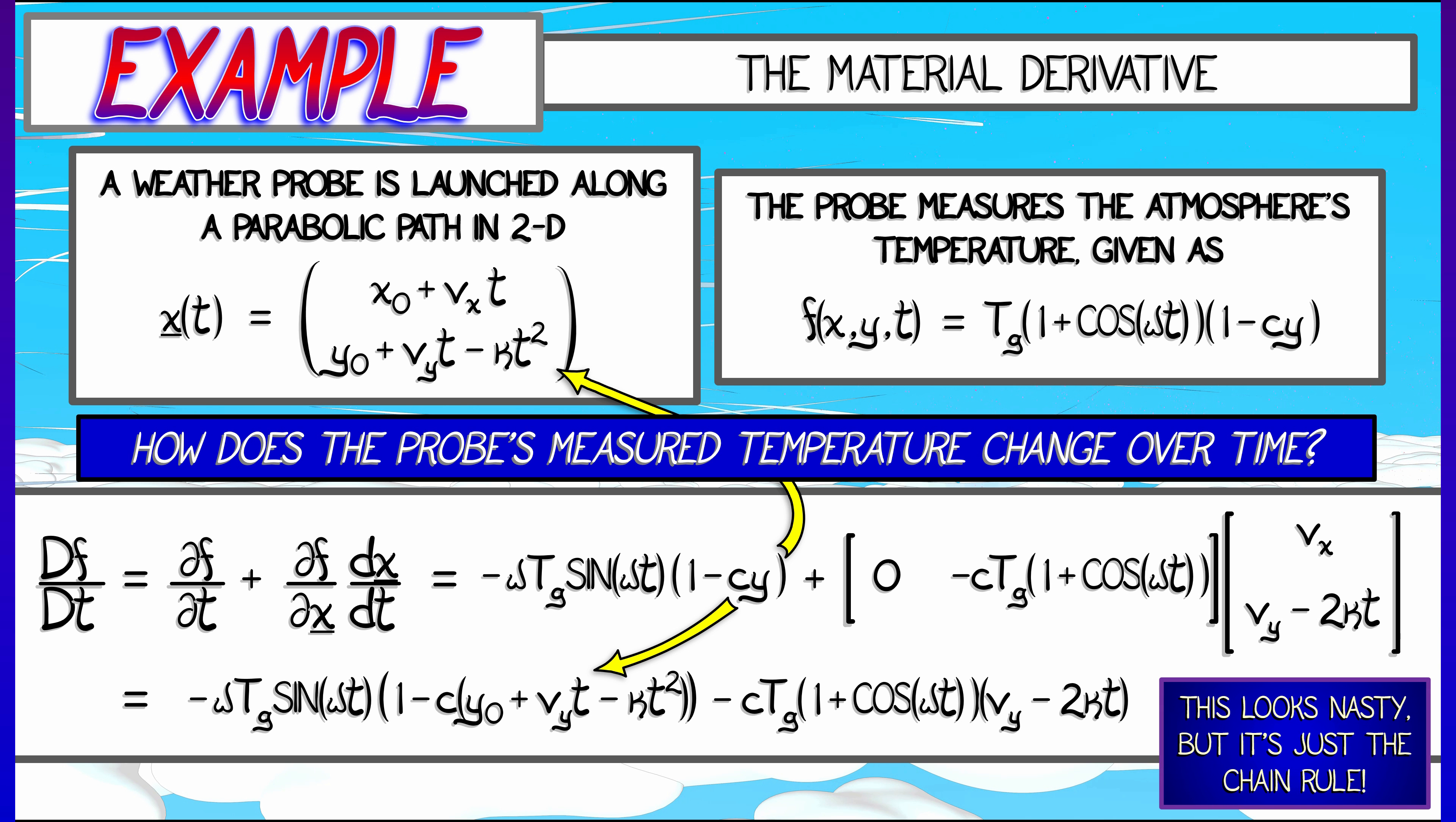Look, it looks kind of nasty. The algebra is not very clean to look at, and this is a really simple 2D example. We haven't really done things fully in 3D, but look, this is just the chain rule, and it's giving you how the temperature changes as a function of time, as experienced by that weather probe.